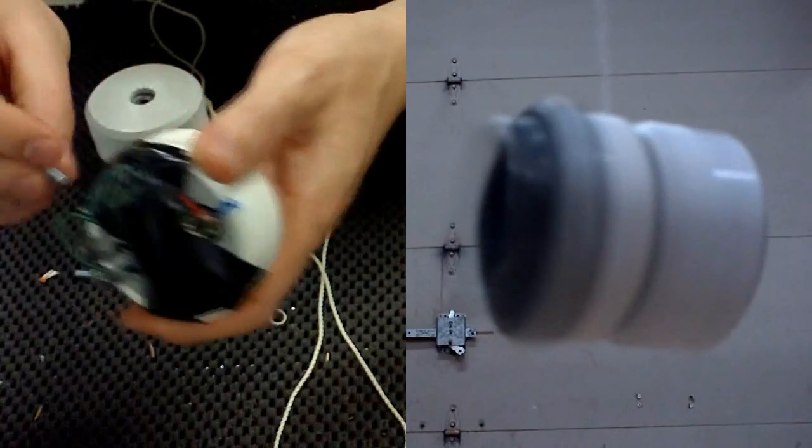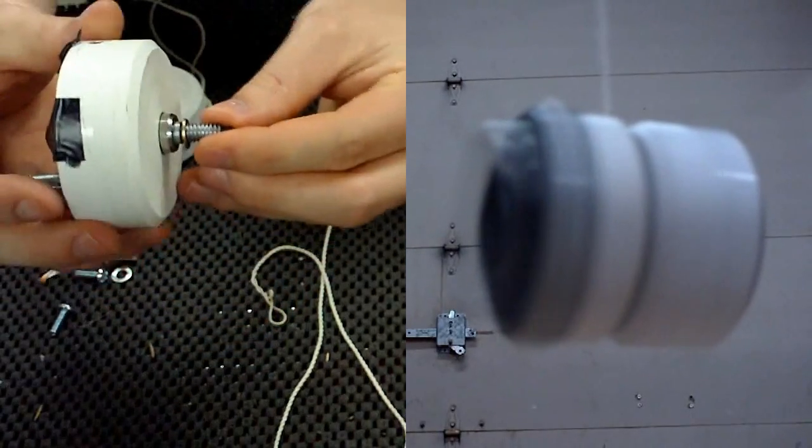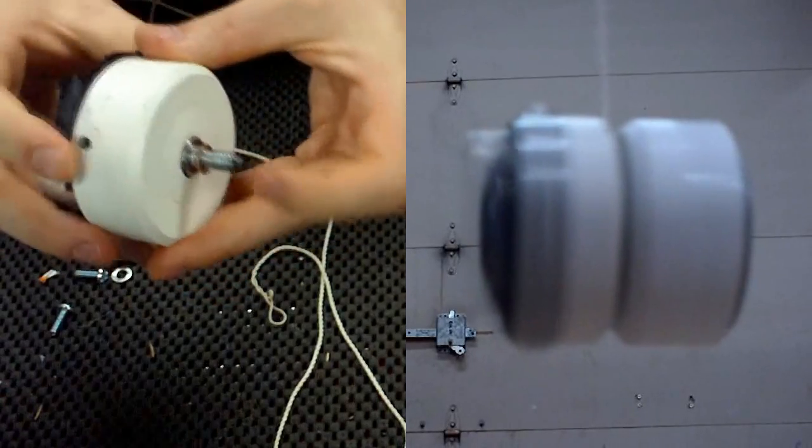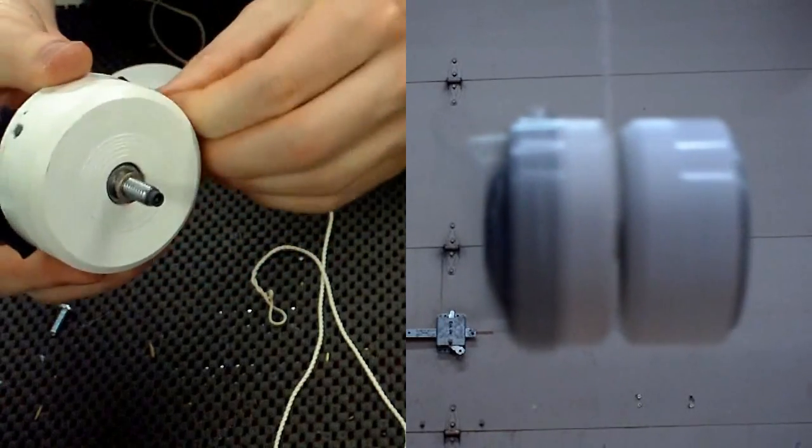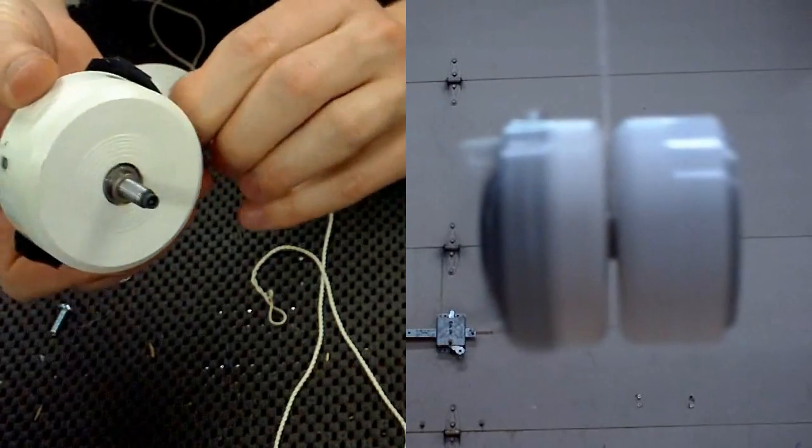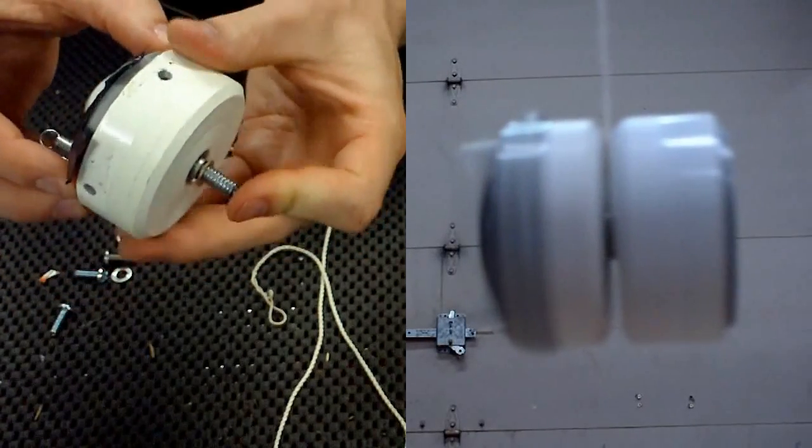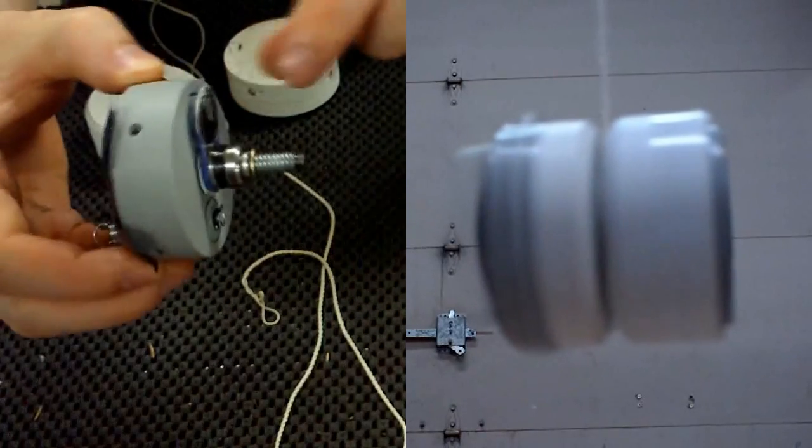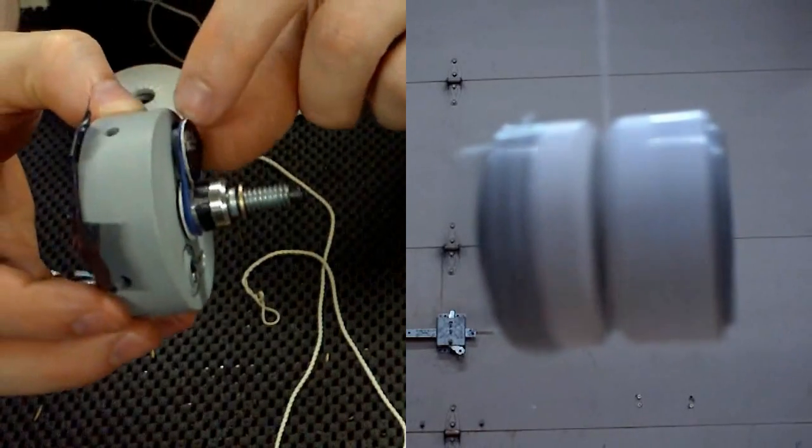And on this side, there's an outer shell which covers up the belt that drives the motor.